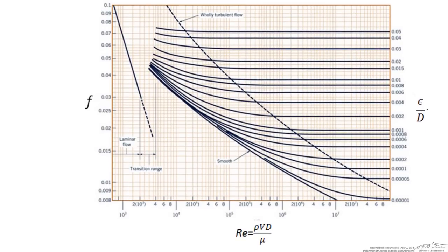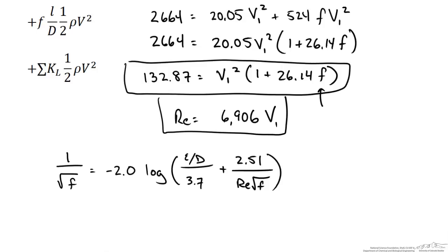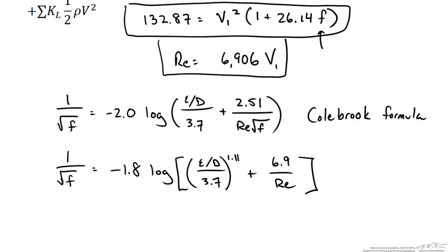Now one way to do this is using the Moody diagram and if you did it this way you would be guessing and reading and guessing and reading until you get it right. A more analytically accurate method maybe in this case is to use what is known as the Colebrook equation. Now this is the Colebrook formula but as you can see this also requires an iterative approach since we have the friction factor f on both sides of the equation. Another one which doesn't is known as the Haaland equation and that is what we are going to use here.